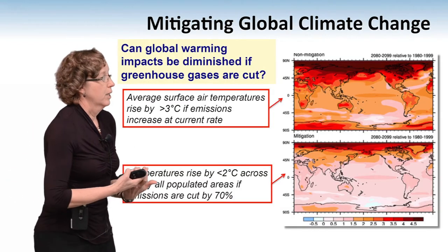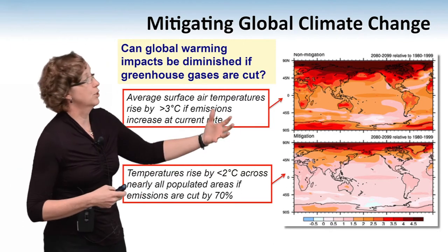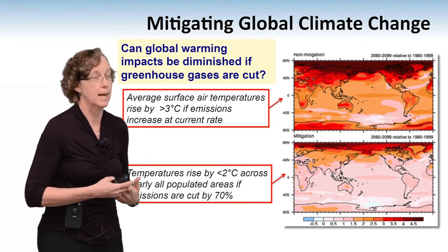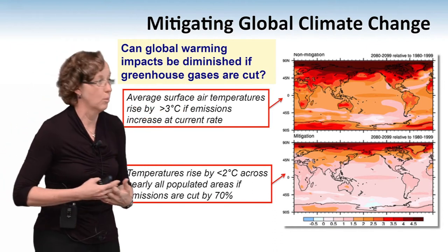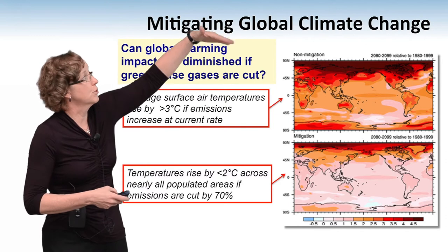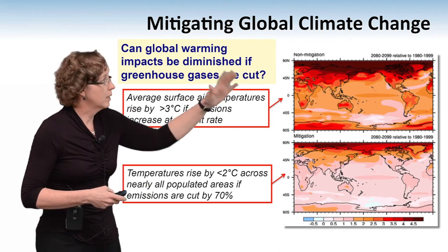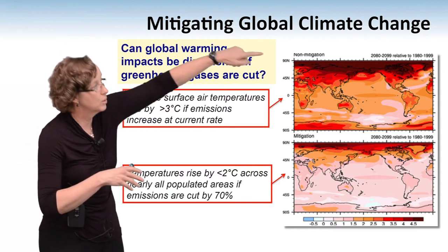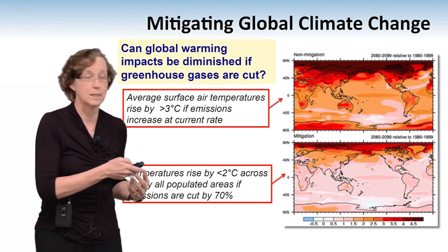You can get depressed looking at global climate change data, but there is good news. Computers help us understand how to reverse climate change. A question addressed by Warren Washington and other scientists is whether global warming impacts can be diminished by significantly cutting greenhouse gas emissions. The bottom simulation shows a 70% decrease in greenhouse gases; the top shows business as usual. At the top, temperature rises by over 3 degrees Celsius; at the bottom, it rises by less than 2 degrees Celsius in most populated areas. Some of the most significant impacts on ocean circulation also do not occur in the bottom simulation.